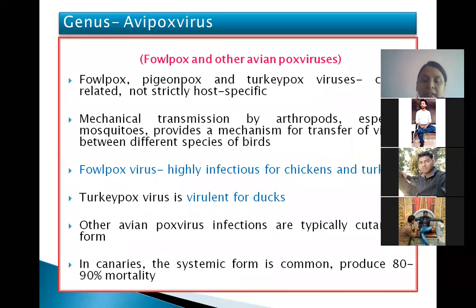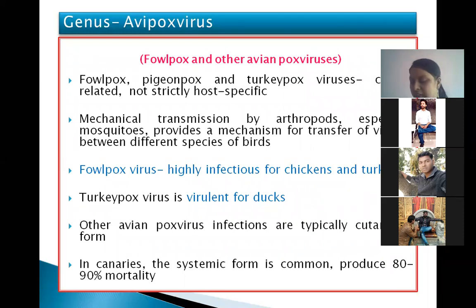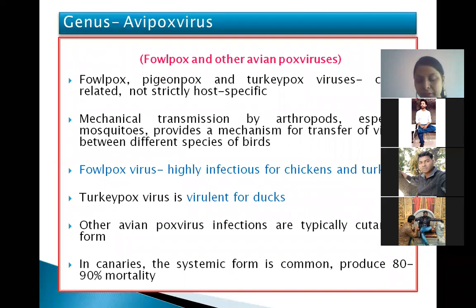Fowlpox virus can affect other species of birds apart from fowl. It is highly infectious for chicken and turkey, and Turkeypox virus is also virulent for ducks. Other avian pox virus infections typically cause cutaneous lesions. In canaries, a singing bird, systemic infection is very common and produces 80 to 90% mortality.